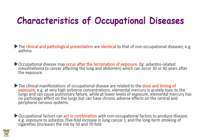Characteristics of occupational disease: the clinical and pathological presentation is identical to that of a non-occupational disease, for example asthma. Occupational disease may occur after the termination of exposure — so once the person is no longer being exposed or has moved to a different industry. For example, asbestos-related mesothelioma — a cancer affecting the lungs and abdomen — can occur maybe three or four decades after the initial exposure.